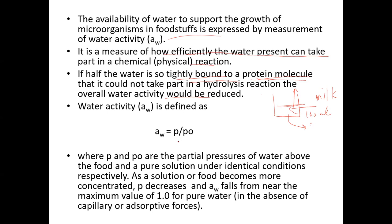Water activity is equal to P divided by P0, where P and P0 are the partial pressure of water above the food and above a pure solution under identical conditions respectively. P is the partial pressure of water above the food, and P0 is for the pure solution, which is pure water.